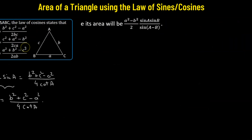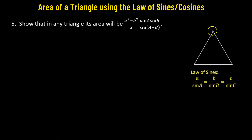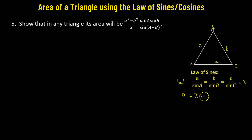Problem number five uses the law of sines. The law of sines states that for triangle ABC with sides a, b, c opposite angles A, B, C respectively: a/sin A = b/sin B = c/sin C. We let this common ratio equal λ, so a = λ·sin A, b = λ·sin B, and c = λ·sin C.